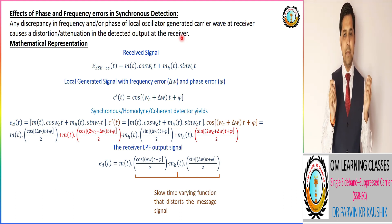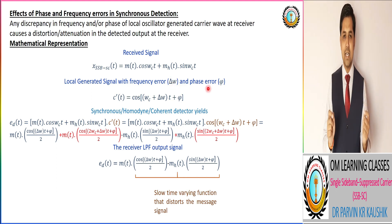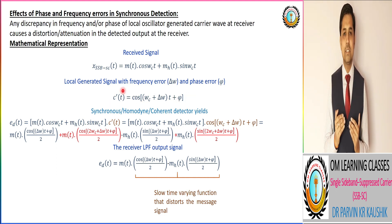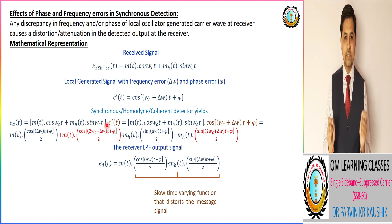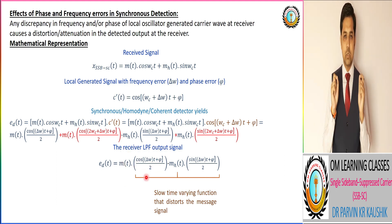For the mathematical representation, we first take the received SSB-SC signal and multiply it by the locally generated signal, which has a frequency error corresponding to Δω and a phase error corresponding to φ. This local oscillator signal is then multiplied with the received signal as per the block diagram of the receiver using a product modulator. Passing that signal through a low pass filter, we get the detected output EDT, which is equivalent to m(t)/2 · cos(Δω·t + φ).